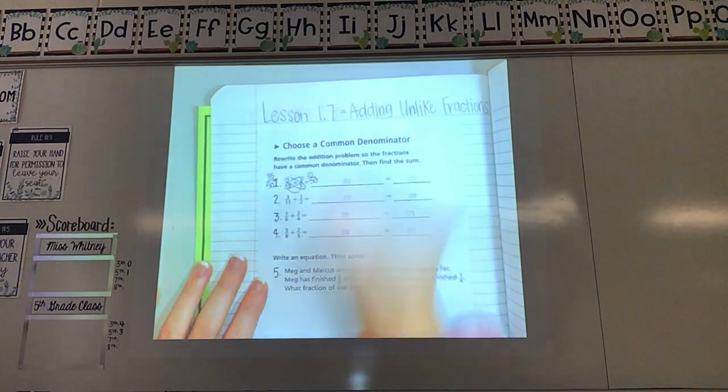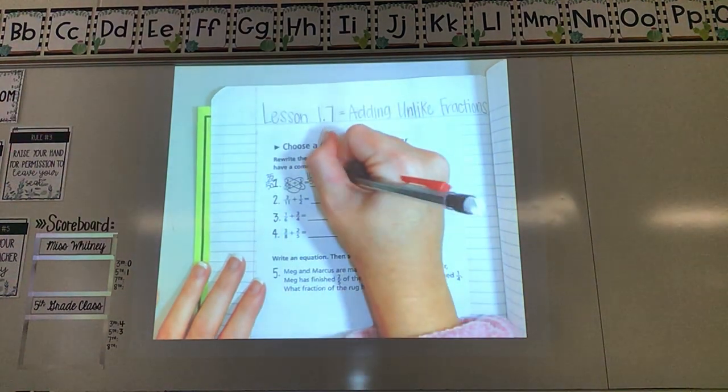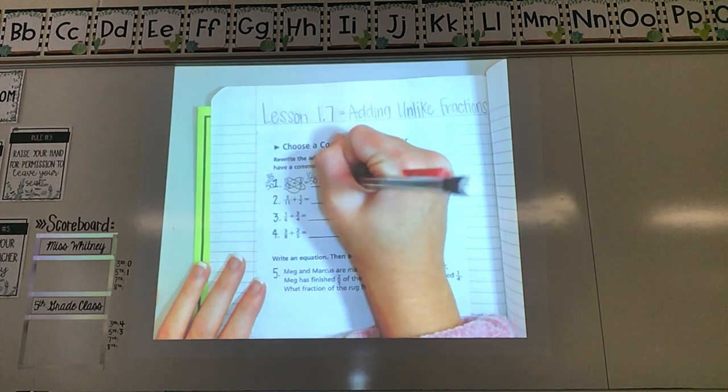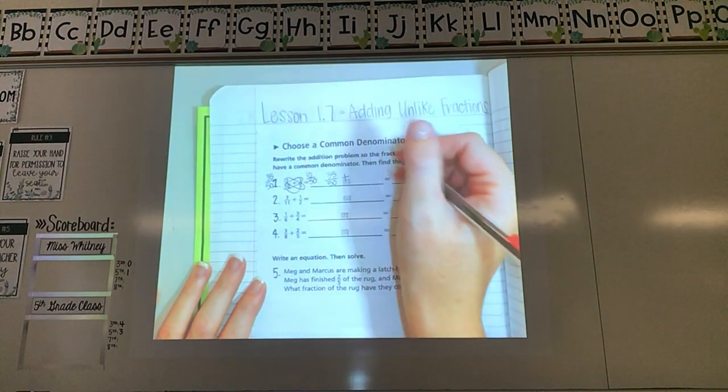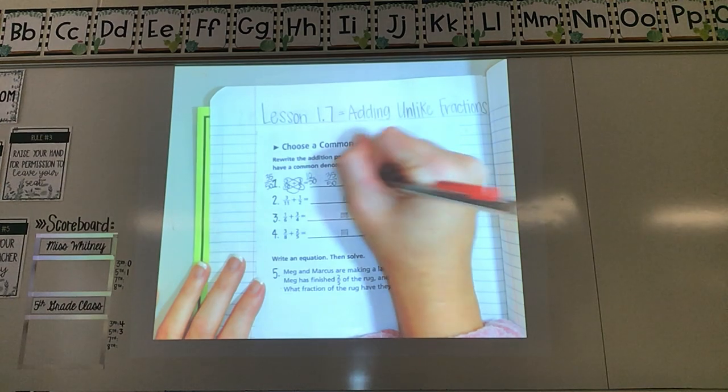And now I have fixed my fractions. I'm going to go ahead and copy them down. So 35 fiftieths plus, because remember, we're adding, 10 fiftieths.